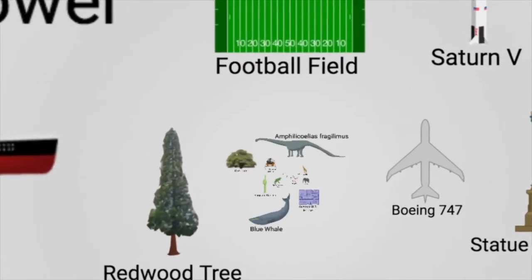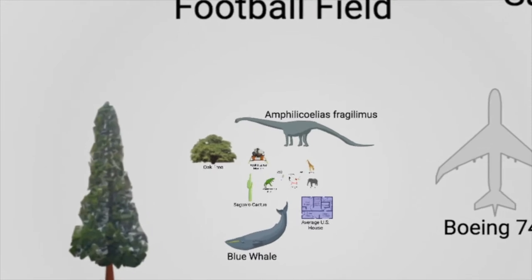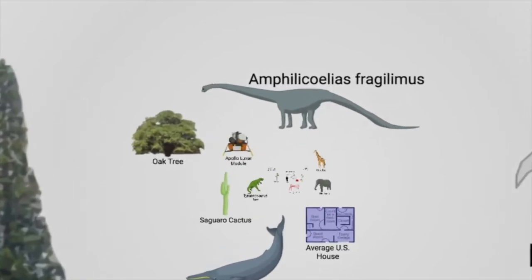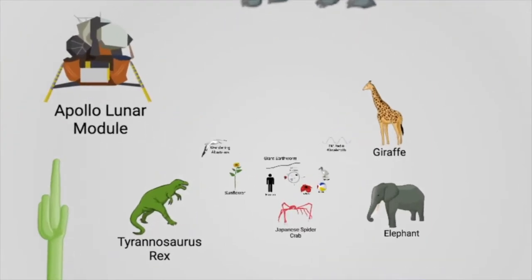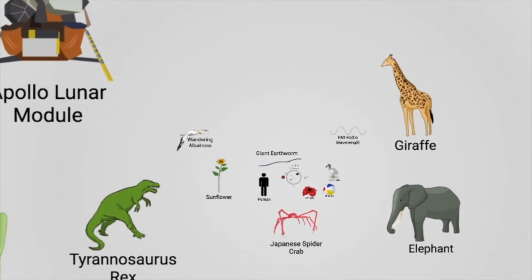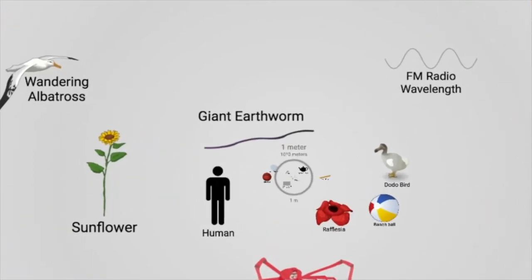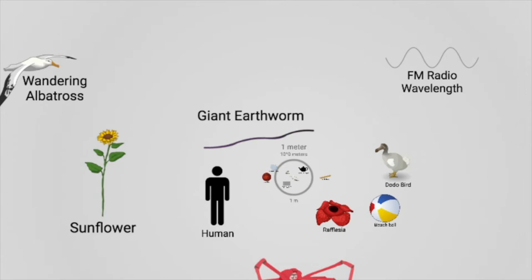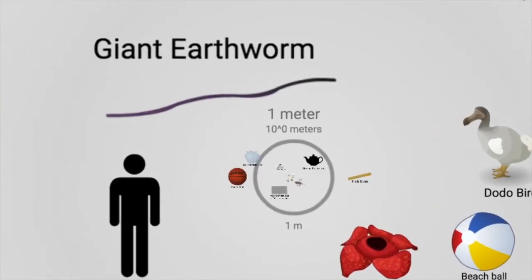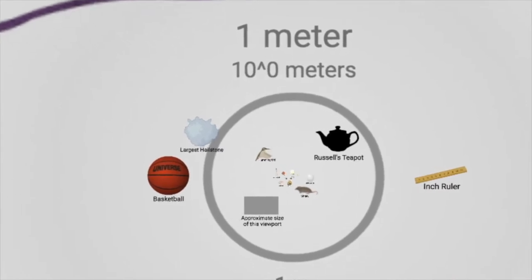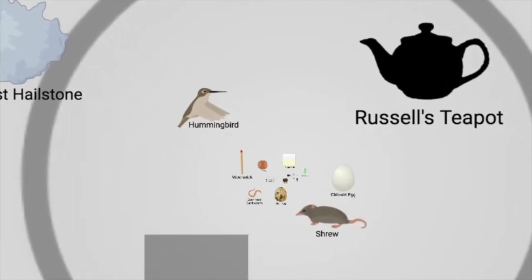As we zoom in closer, we have a standard aircraft, the Boeing 747, the Blue Whale, and the Oak Tree. Continuing to zoom in, we're approaching life forms that are familiar to us: an elephant, a giraffe, and human beings. If we continue past our frame of reference for size, we encroach upon the one-meter circumference, with the average shrew, a Russell's teapot, and an egg.